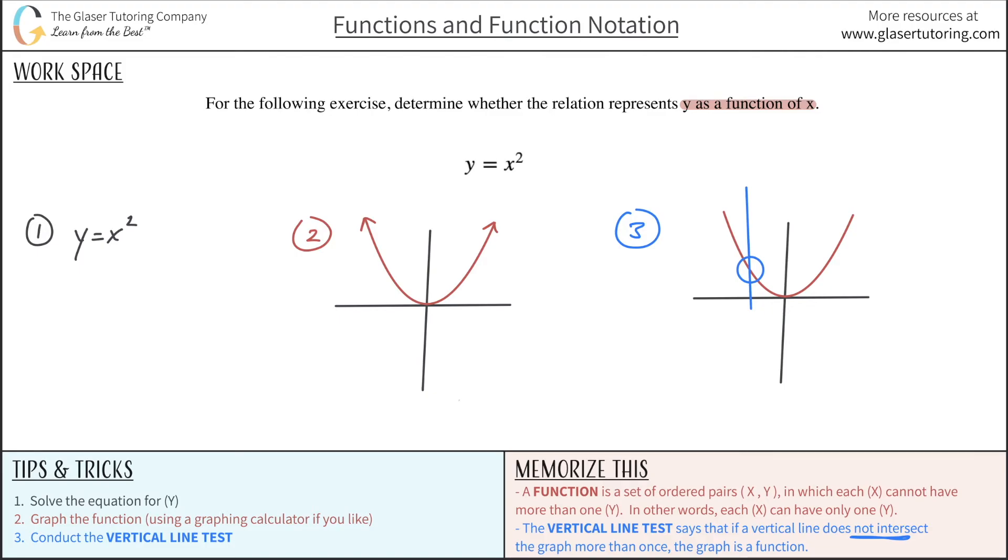And therefore, this is indeed a function. That's the whole point of the vertical line test. It's to tell whether the graph is a function or not. Very easy. You can see it in terms of a picture. I think that makes it a lot simpler.